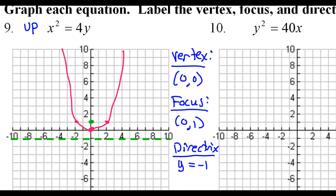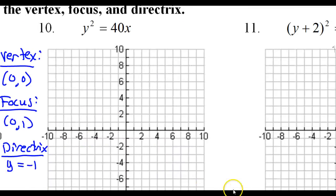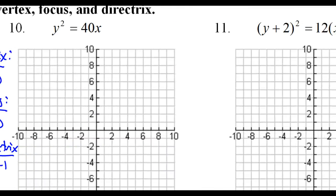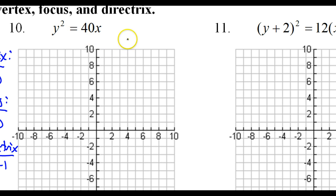I'll put the info off to the side. Looking at number 10 — see how the y is squared? That tells me that's one of those sideways parabolas. Since everything is positive, I know that this is going to be going to the right.